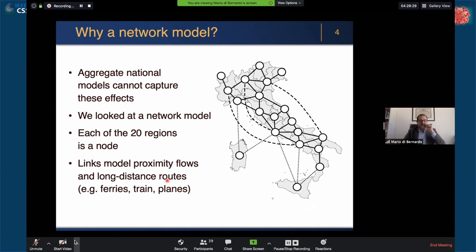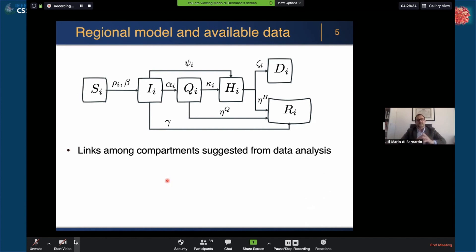Let's start with the regional model. Here is the model we use. This is an SIR modified model where we have the susceptibles, the number of infected, a compartment for the quarantined, a compartment for the hospitalized, then a compartment for the deceased and the compartment for the recovered. You see the links showing the connections between the compartments and the various parameters.